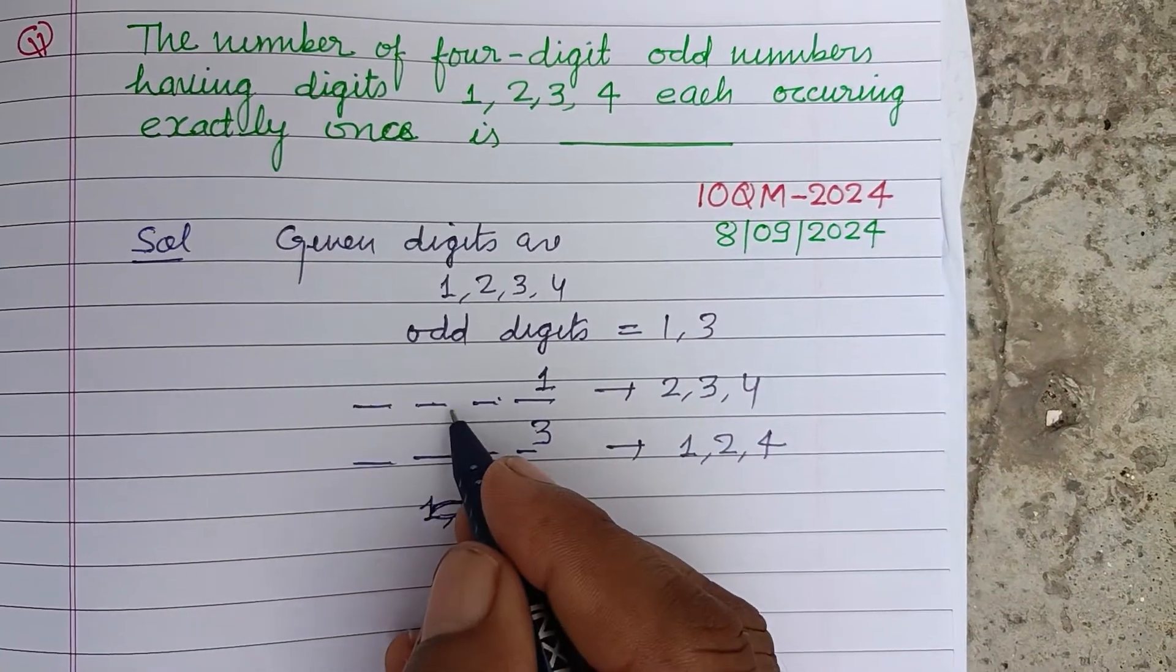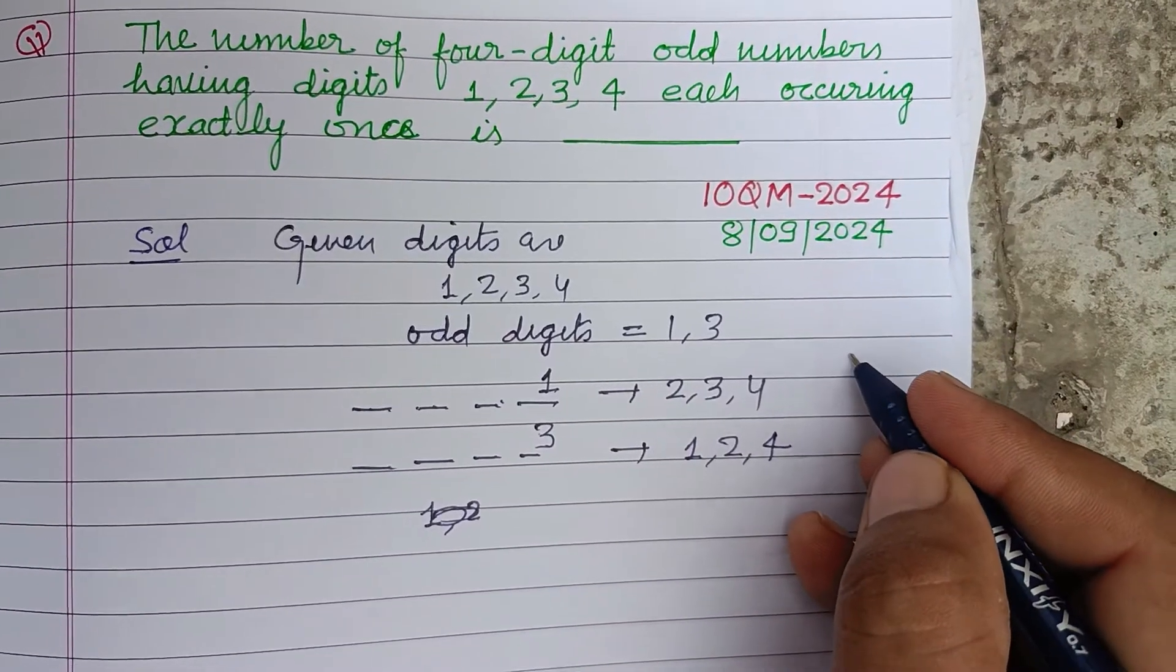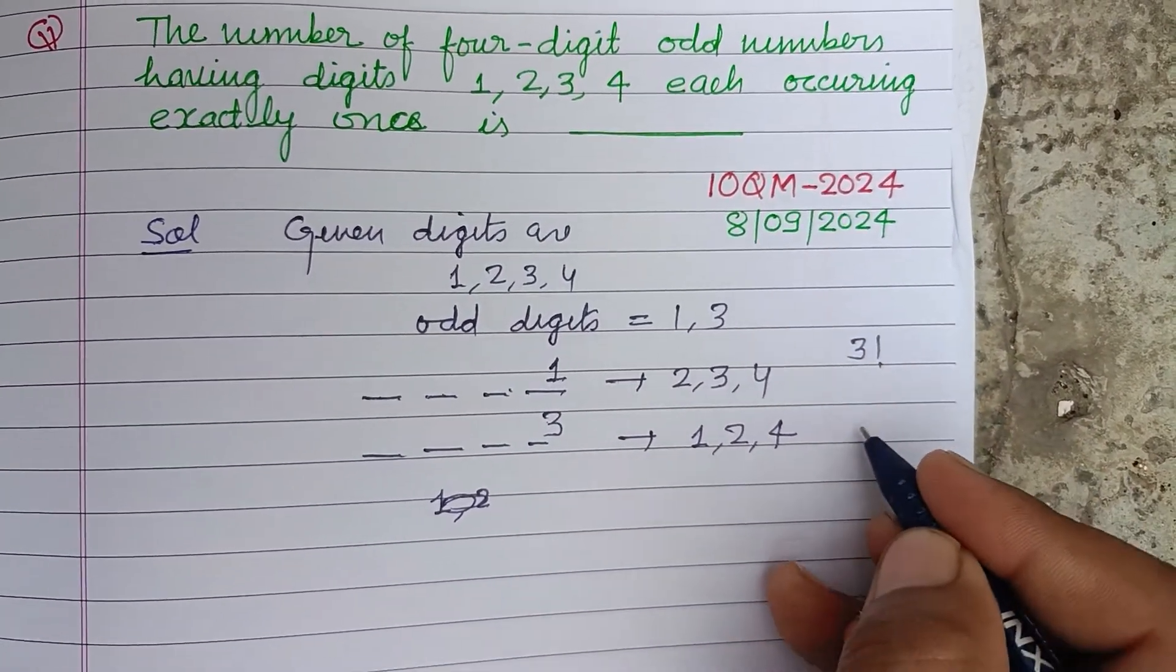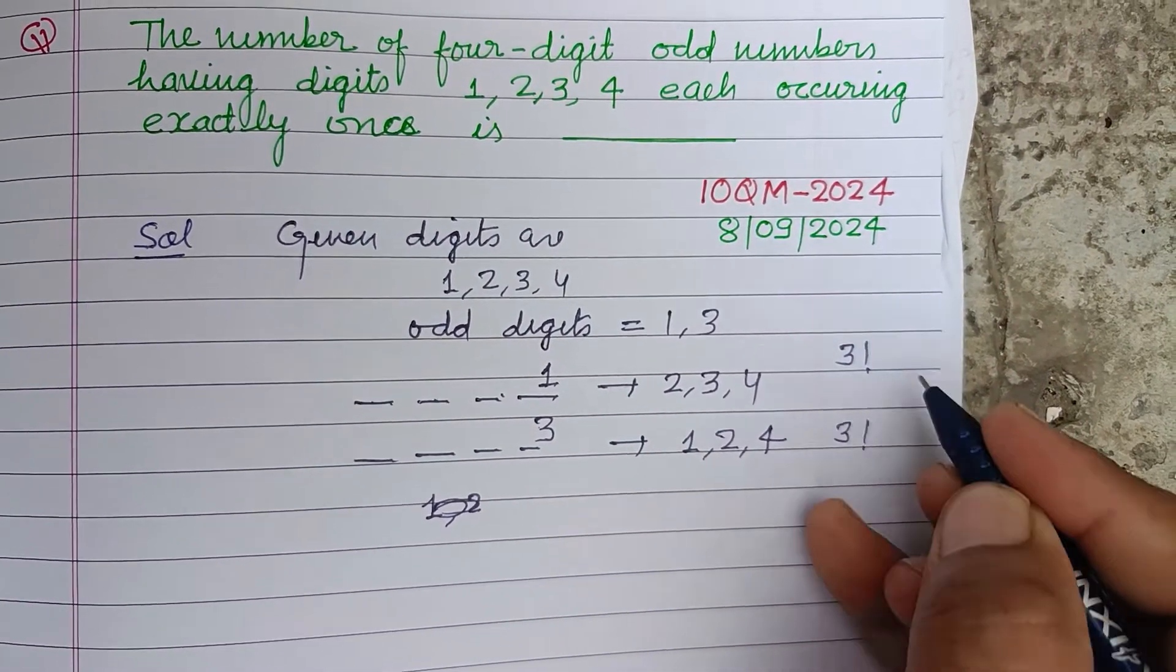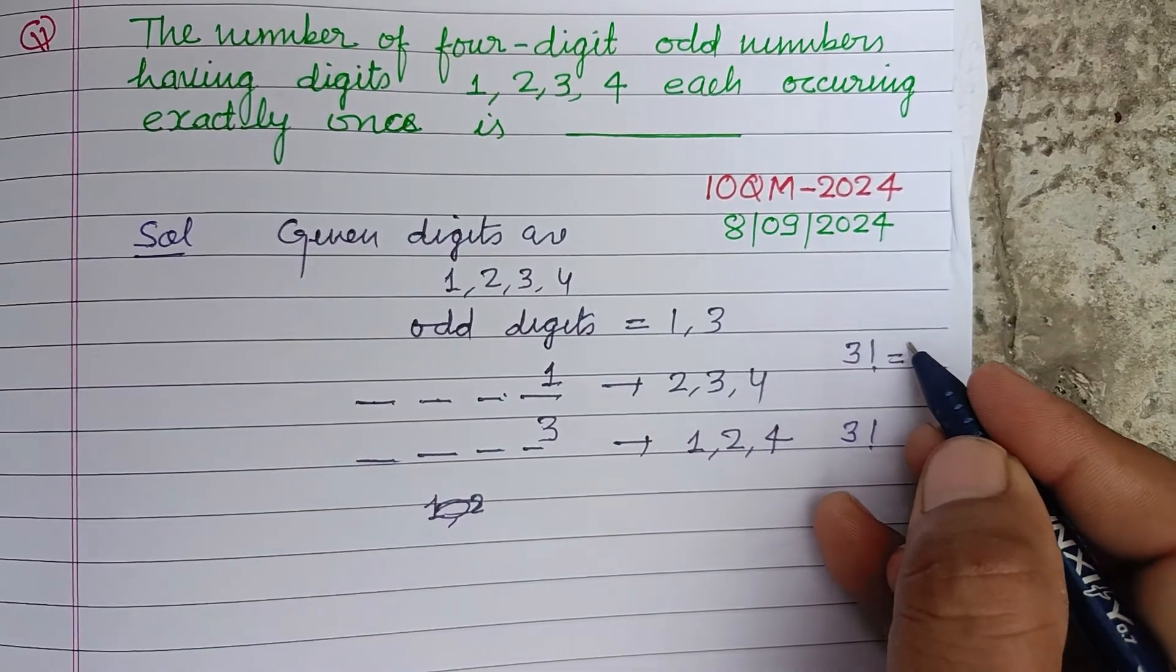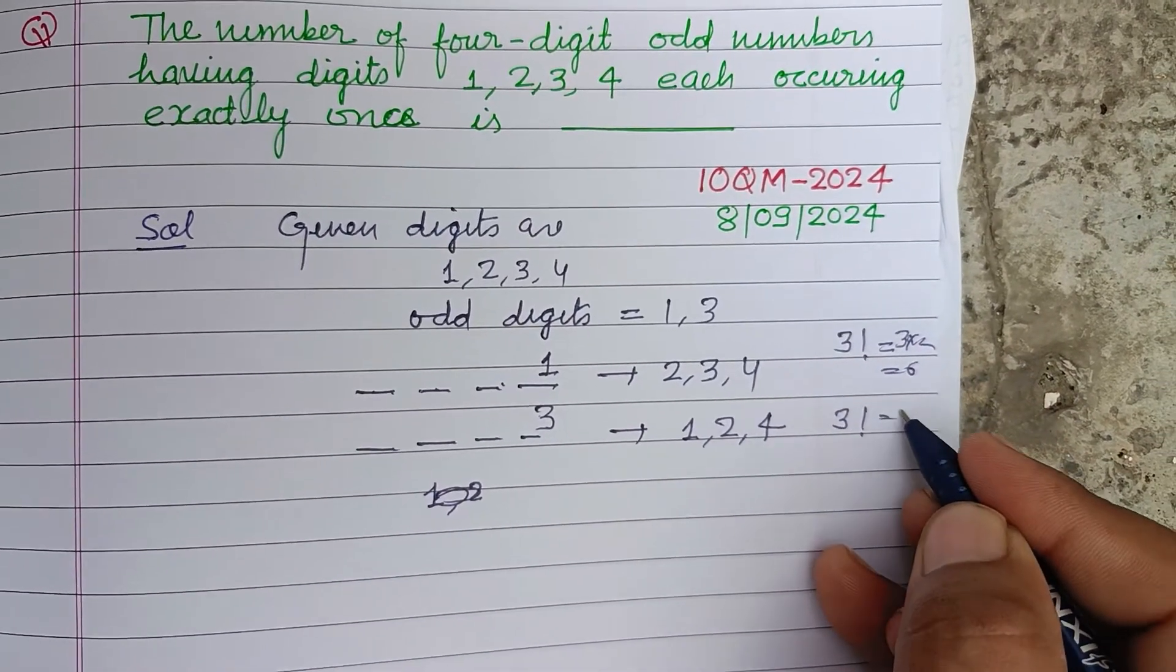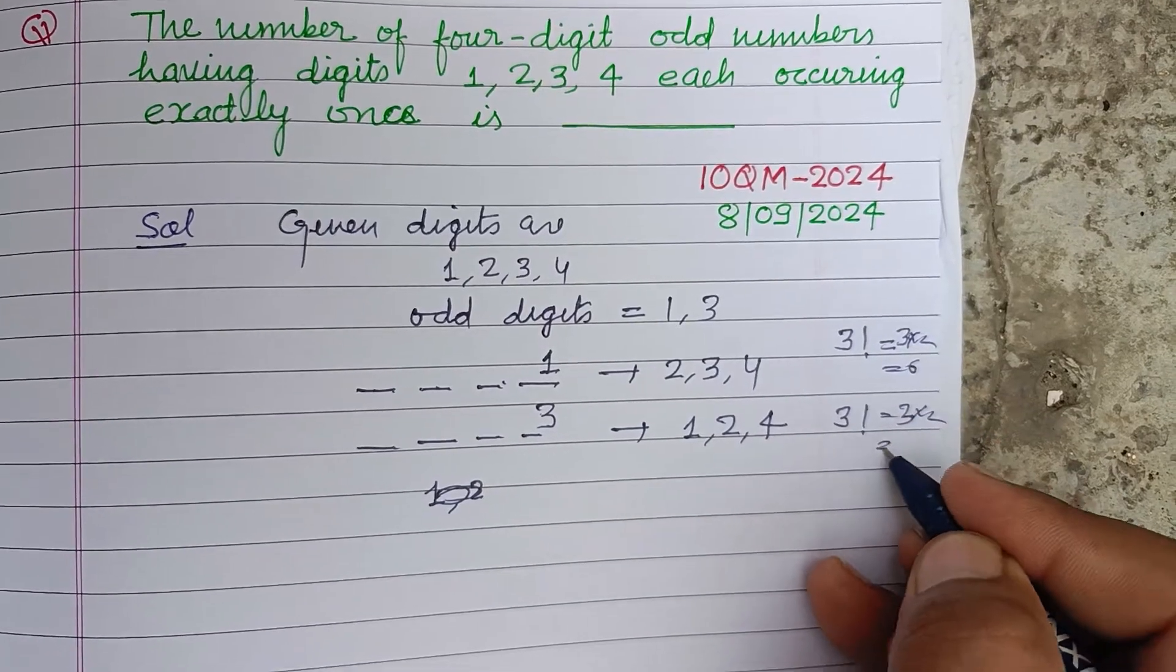We can fill three places by three numbers using 3 factorial times, and this is also 3 factorial times. 3 factorial equals 3 times 2, that is 6, and this is 3 times 2, that is also 6.